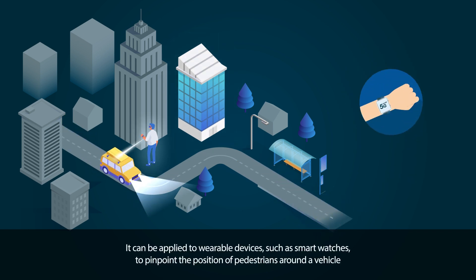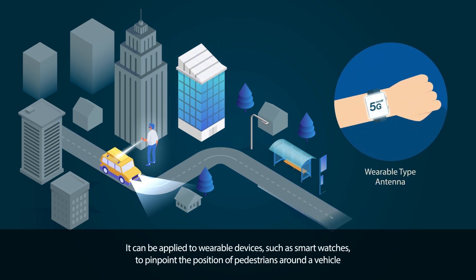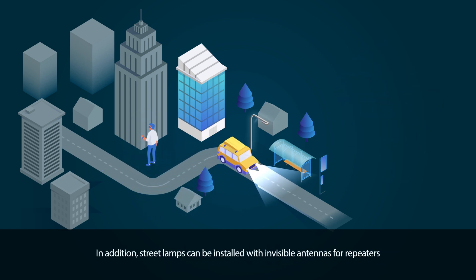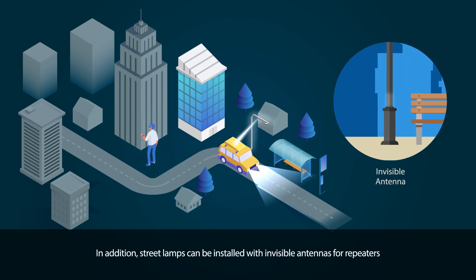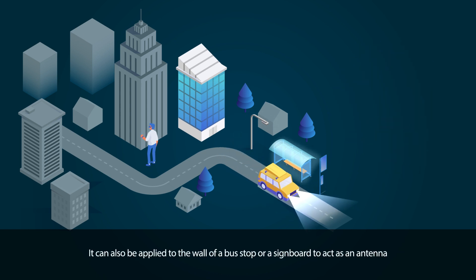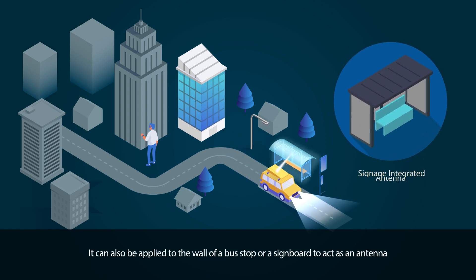It can be applied to wearable devices such as smart watches to pinpoint the position of pedestrians around a vehicle. In addition, street lamps can be installed with invisible antennas for repeaters. It can also be applied to the wall of a bus stop or a signboard to act as an antenna.